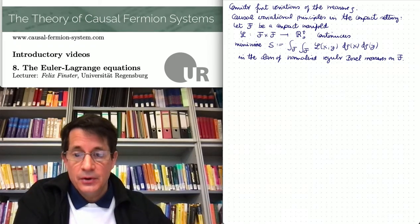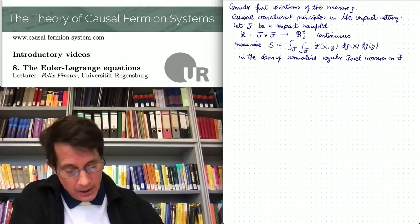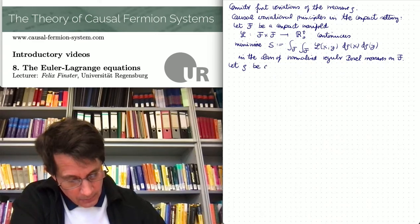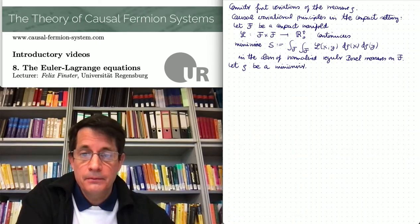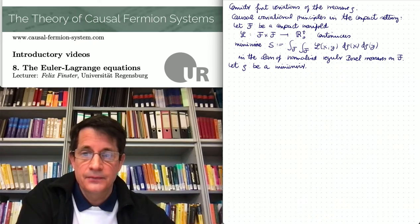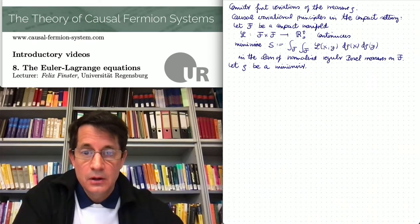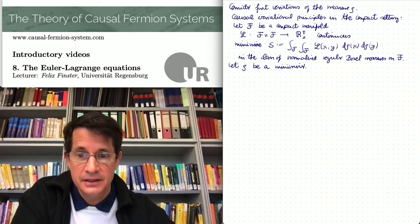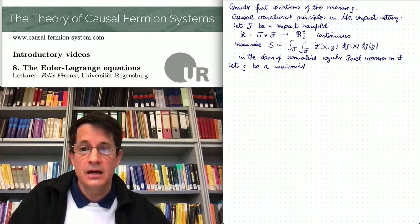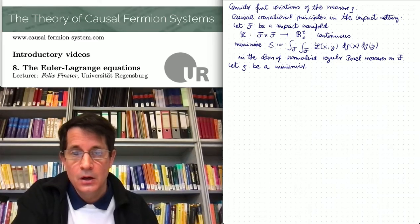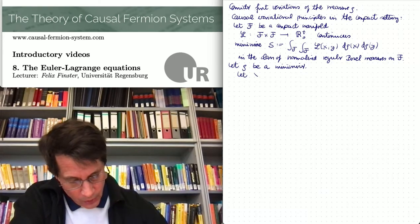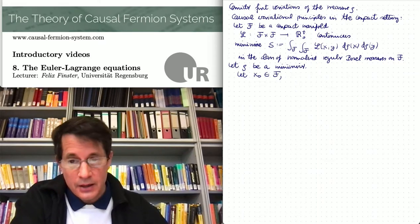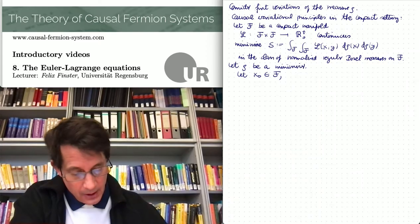We want to analyze first variations around a minimizer. So let rho be a minimizing measure. How do we write down the first variations? It's good to consider a specific ansatz, which in fact captures everything. In other words, if the resulting Euler-Lagrange equations are satisfied, then first variations vanish in general for any variation. This specific class of variations looks as follows: I choose a point x0 in curly F and consider the Dirac measure at x0.